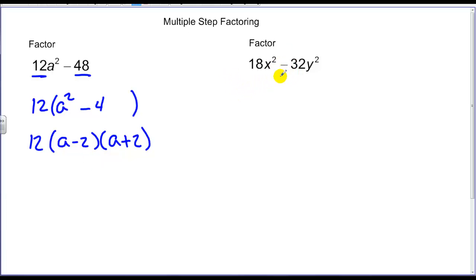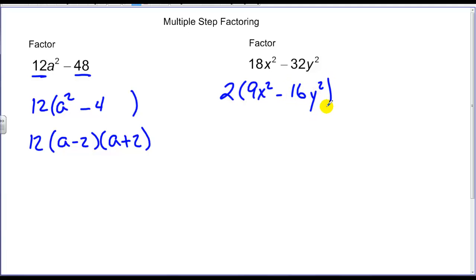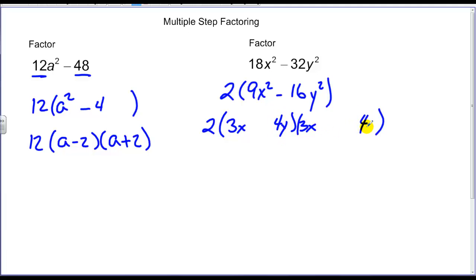Again, I have two terms and there's a difference between them, but 18 and 32 are not perfect squares. I check to see if anything goes into either one — surely enough, 2 goes into each. So I pull out my GCF of 2, and I'm left with 9x squared minus 16y squared. Those happen to be perfect square terms. The square root of 9x squared is 3x, and the square root of 16y to the fourth is 4y. I need a positive and a negative, and there's my factoring.